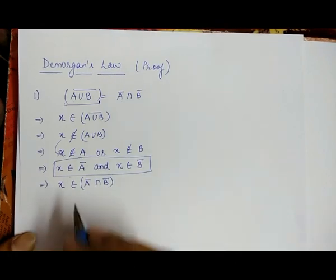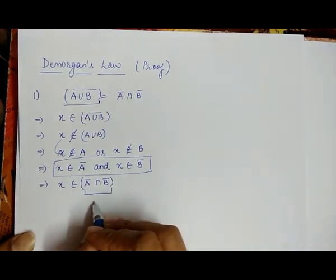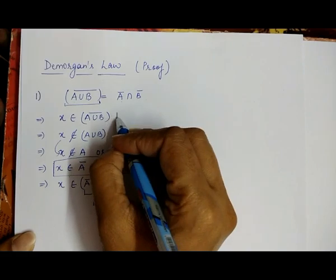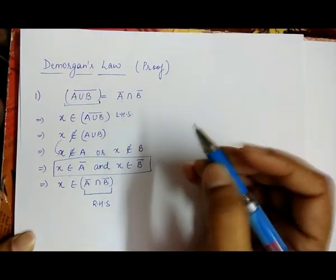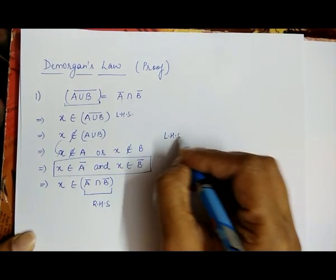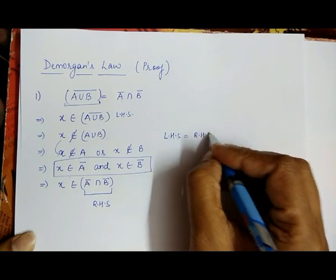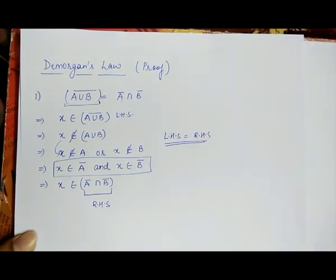This gives the right hand side, and since we started from the left hand side, this proves that left hand side equals right hand side. This is the proof for the first de Morgan's law.